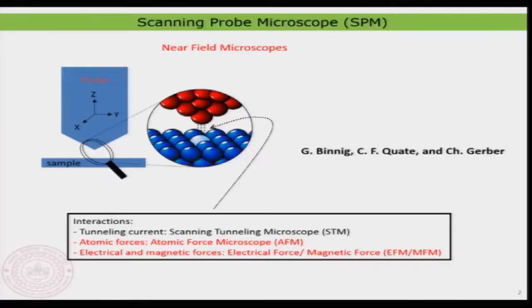I have already shown you an image in the previous class about atomic force microscope, but now you are going to see it in greater detail. It again comes under the bigger family of scanning probe microscopy, which we have already talked about. In this case also, what we have here is a probe which is actually able to move along the x, z and y direction — that is quite important.